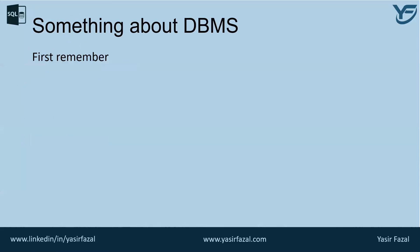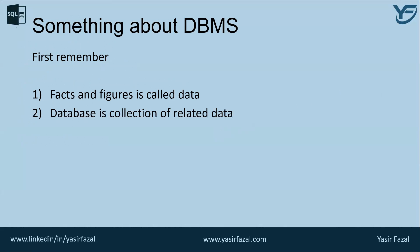A database is basically a collection of related data, and that data is a collection of facts and figures that can be processed to produce more information. Mostly data represents recordable facts, and data aids in producing information which is based on facts. For example, if we have data about marks obtained by all students, we can then conclude about top performers and average marks. This is a basic example of what comes out of a database.